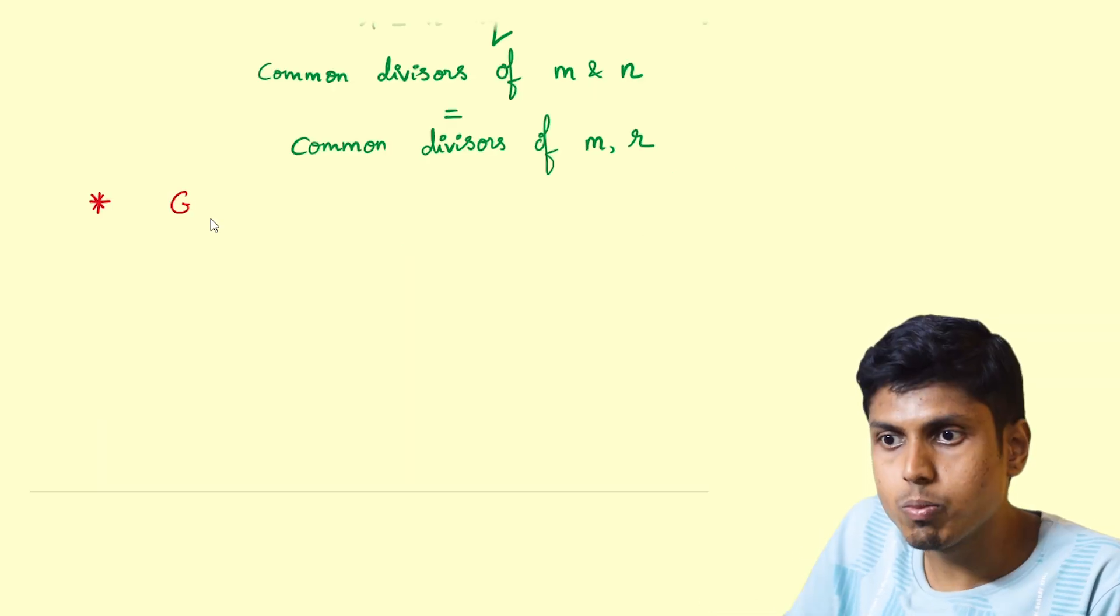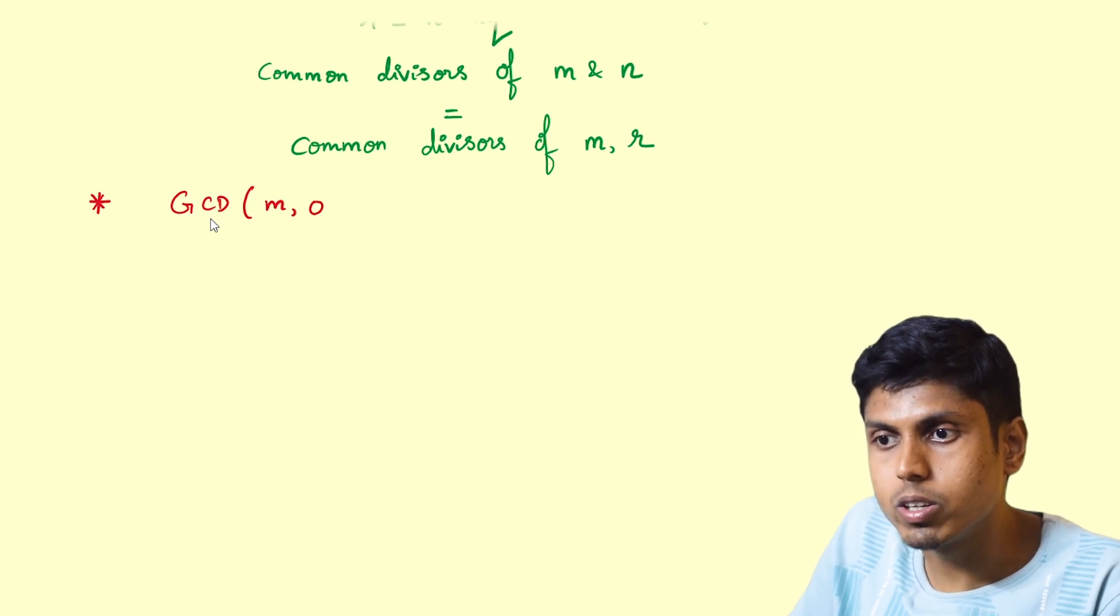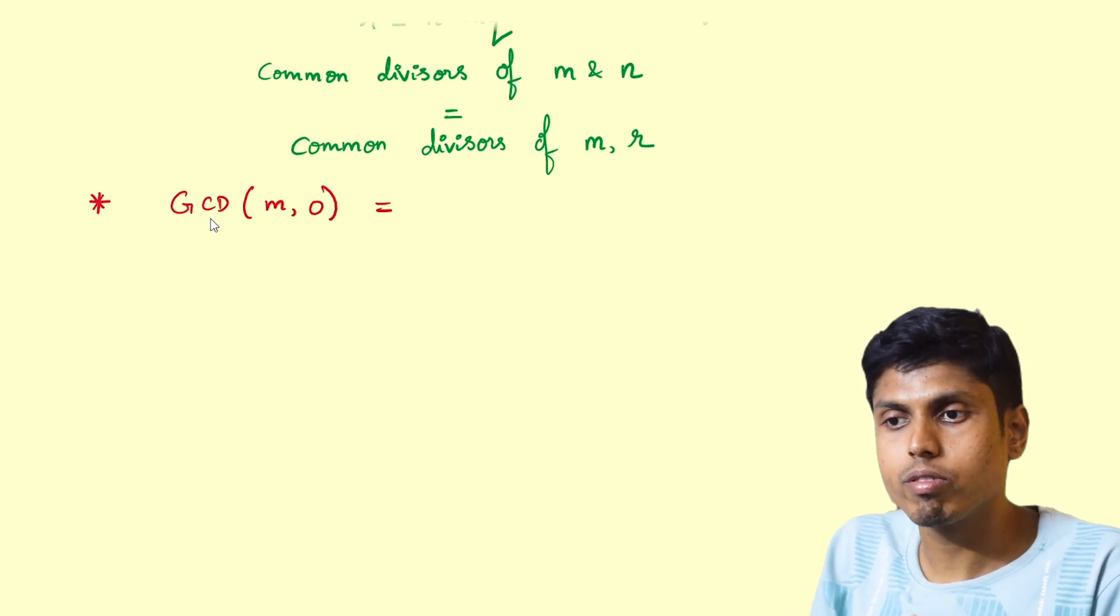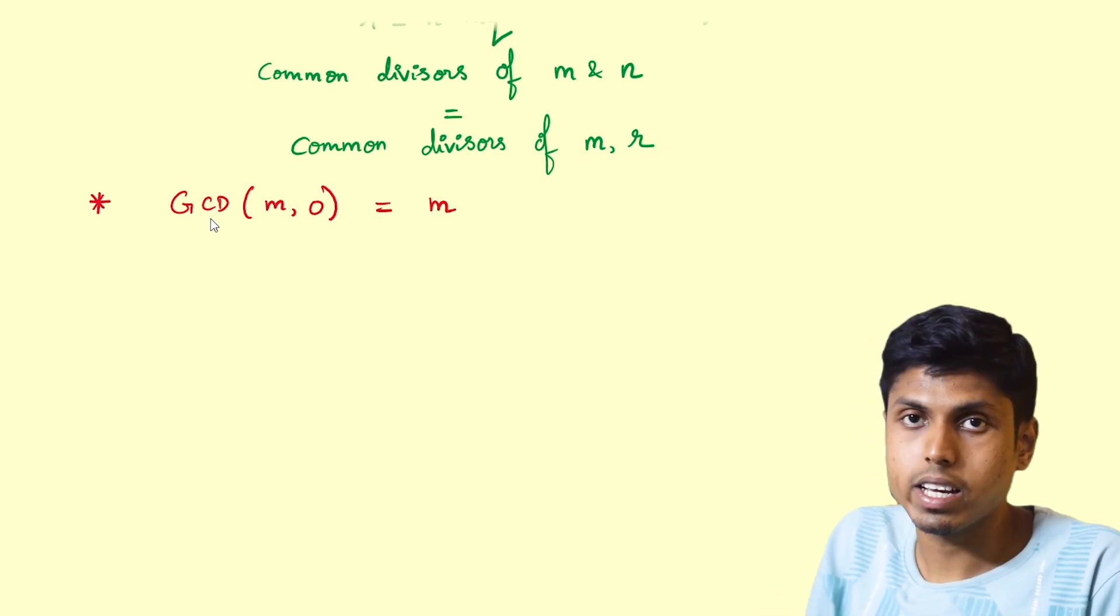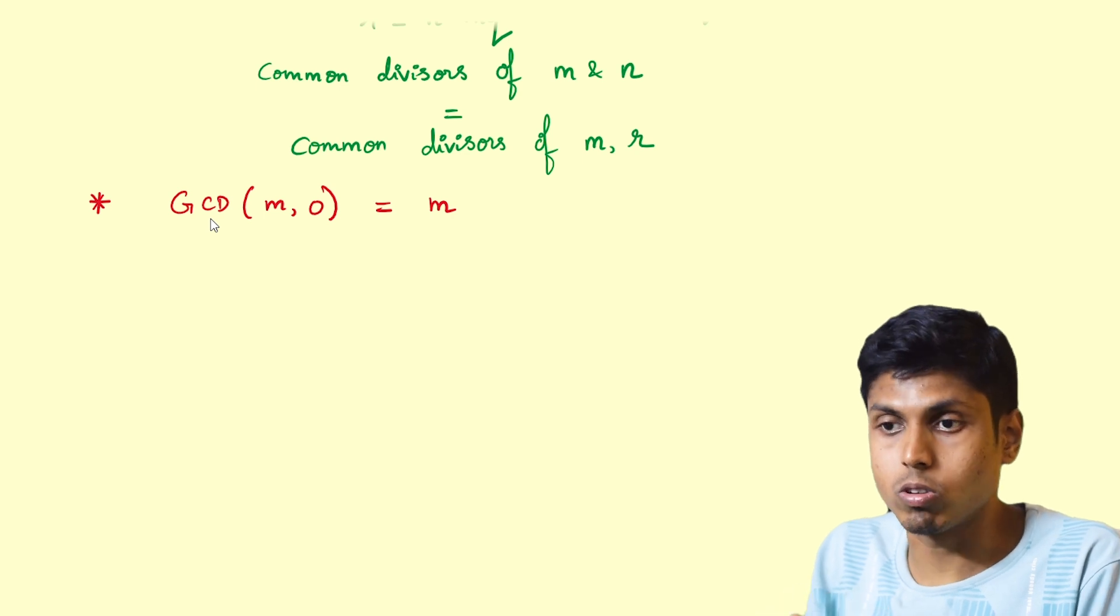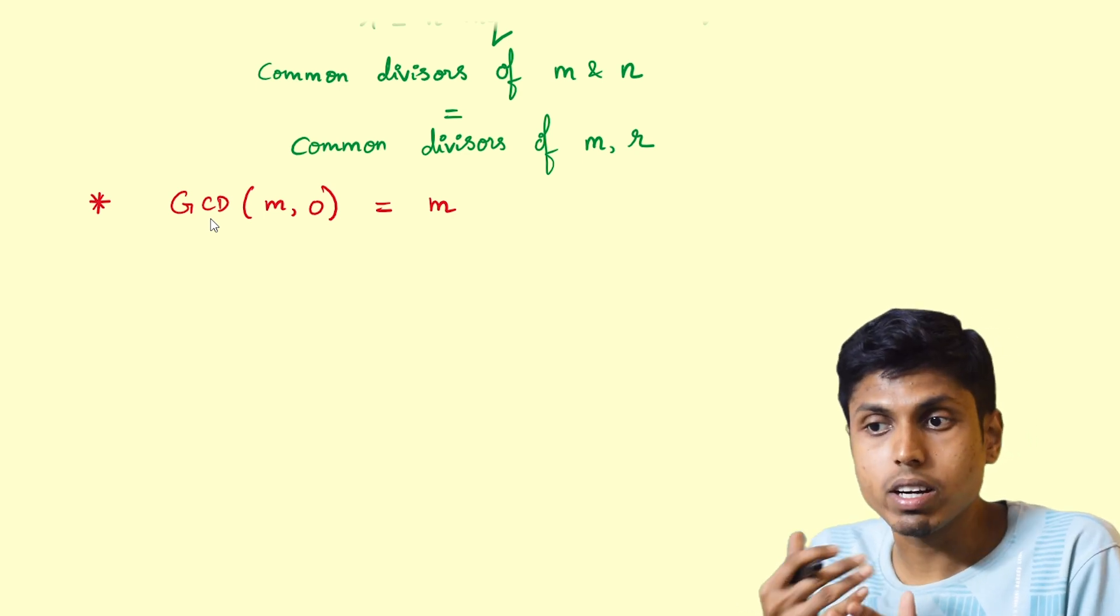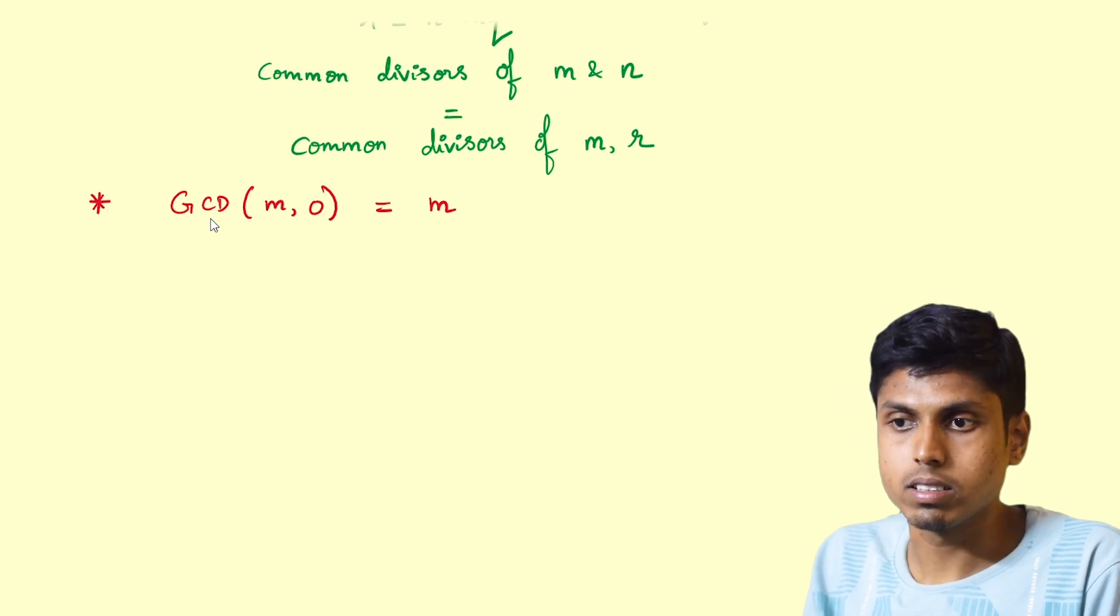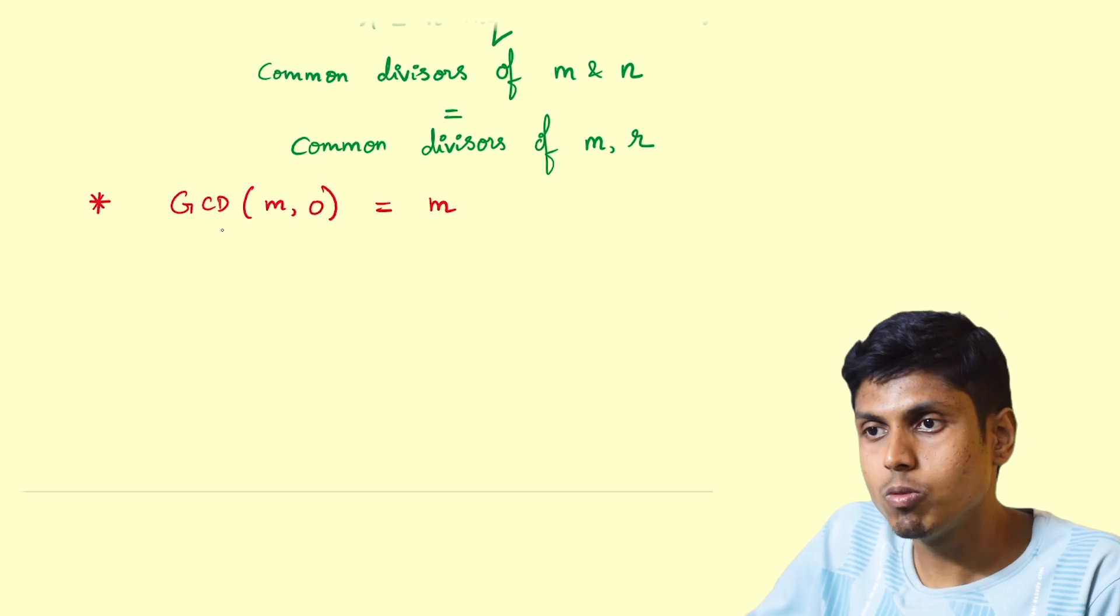Next, a small remark about GCD of a number comma zero. The greatest common divisor of any number m comma zero, any integer m comma zero, is that integer m, and here we assume that of course m is non-zero. It is because any number is assumed to be a divisor of zero, and that is actually true because the remainder is always zero.